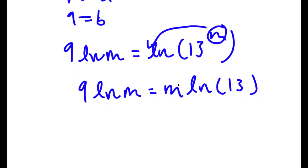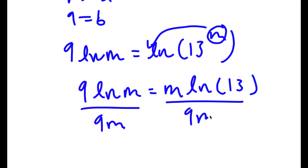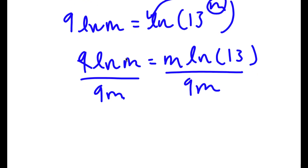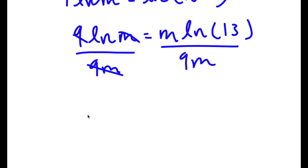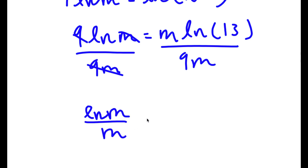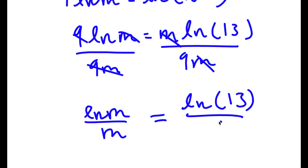Now what I'm going to do is divide both sides by 9m. These terms cancel out and I'm left with ln m over m is equal to ln 13 over 9.